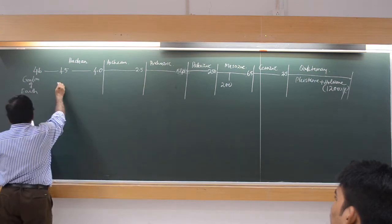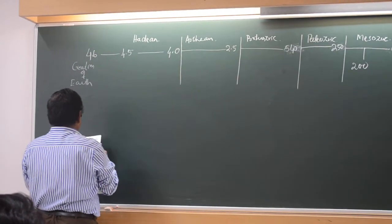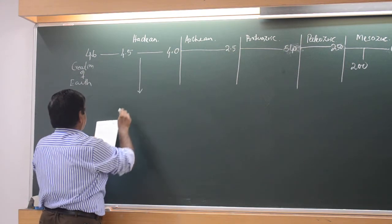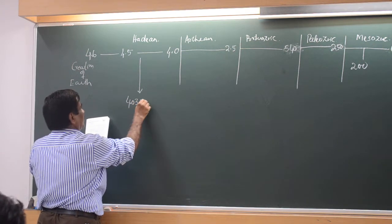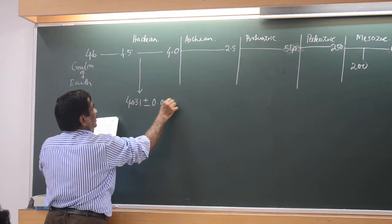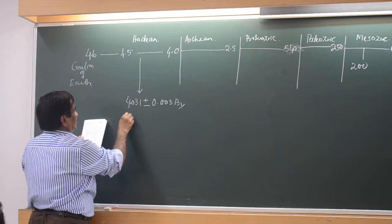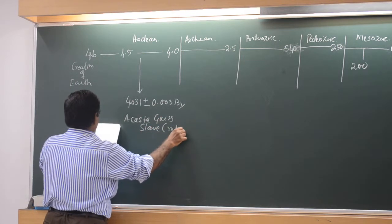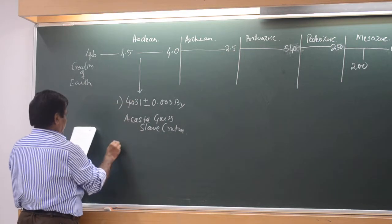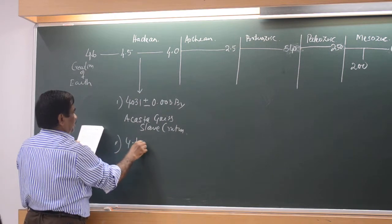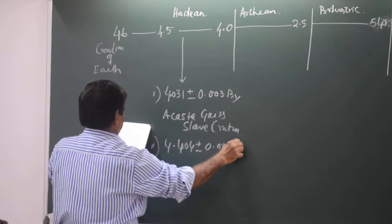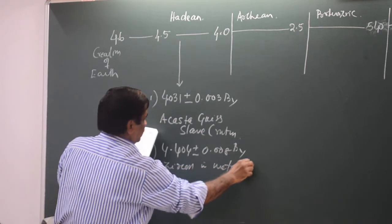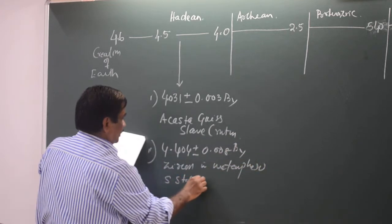Now, I had mentioned to you that day, there are two things here. Here you just draw a line — that is 4.031 plus minus 0.003 — this is the oldest rock. Then oldest terrestrial material — this is one point. Next point is 4.404 plus minus 0.008 — a zircon in metamorphosed sandstone.